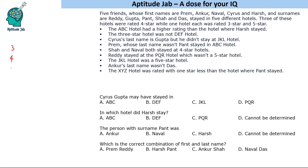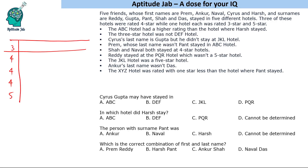So, one hotel is three star, three of the hotels are four star, and one hotel is five star. We'll make a table with columns for the hotel name, the star rating, and the first name and last name of these five people.